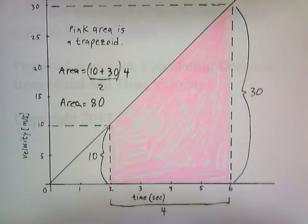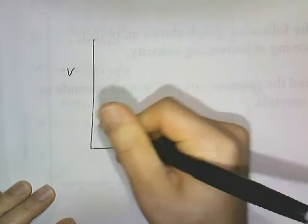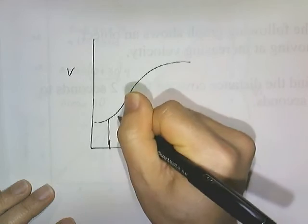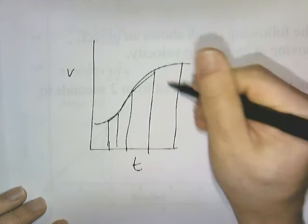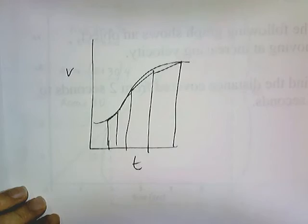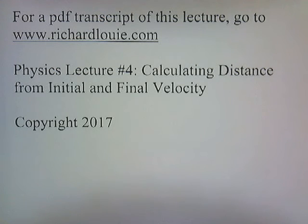This is important because later when you take calculus, you might get a velocity-time graph with a curved line instead of a straight one. To find the area under a curve, you inscribe a whole bunch of trapezoids underneath it, calculate each area, and add them up. This is just a brief introduction to what you'll do in calculus. For a PDF transcript of this lecture, go to www.richardlui.com. This has been physics lecture number 4, calculating distance from initial and final velocity.